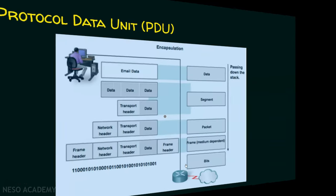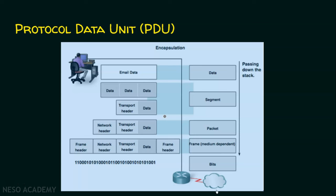Here is an example: a user is accessing a mail server — let's say gmail.com — in a browser and generating application layer data. That email data is simply called data at the application layer. If it is big data, it is broken into smaller pieces, and each piece gets a transport layer header added — that transport layer PDU is now called a segment. Adding a network layer header makes it a packet. Adding a data link layer header and trailer makes it a frame.